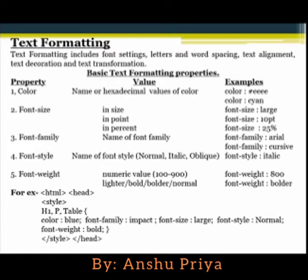Here you can see an example for text formatting. The HTML code starts with the HTML tag, then head tag, then style tag — the CSS coding is inside the style tag. Here you can see h1, p, and table selectors, meaning heading 1, paragraph tag, and table tag. All the text formatting settings are applied to these elements.